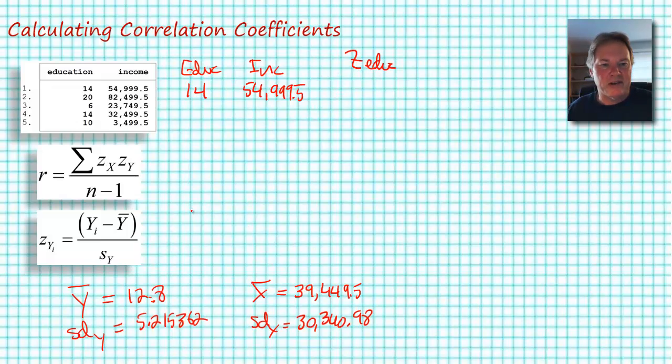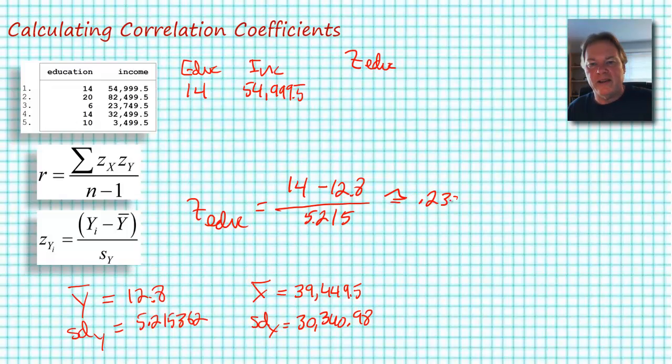So let's go ahead and calculate the z-score for education. The z-score for education is going to be equal to our y sub i minus the mean of y divided by the standard deviation. I'm just going to go ahead and shorten that and that's going to be equal to approximately 0.23009, so I'll put that up here.